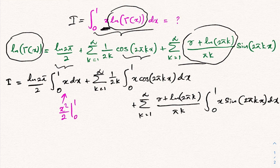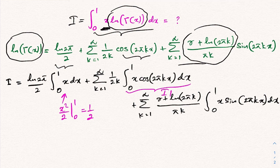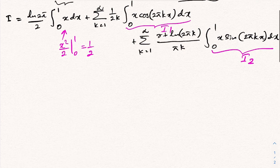For the constant term, integrating x from 0 to 1 gives x²/2 evaluated from 0 to 1, which equals one half. We label the cosine integral I1 and the sine integral I2, and now solve each.